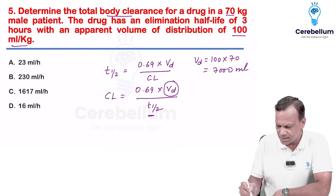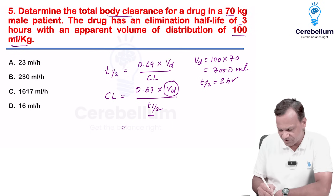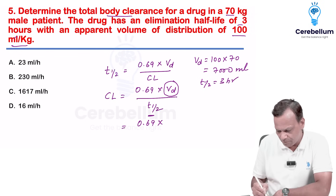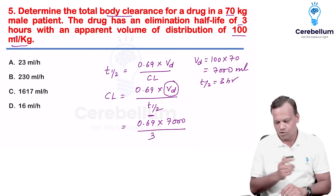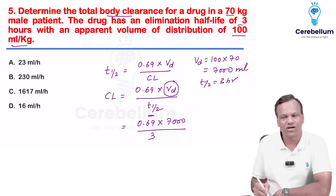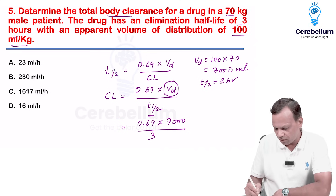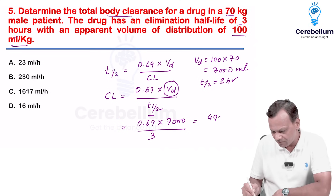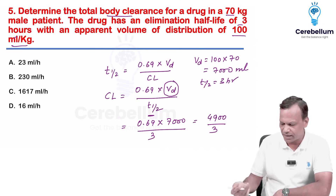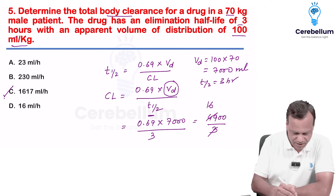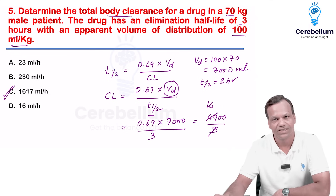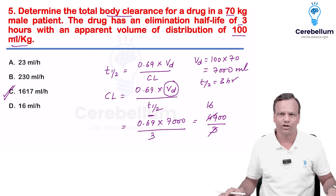The half-life given is 3 hours. Filling the values: clearance = 0.693 × 7000 / 3. Taking 0.693 ≈ 0.7: 0.7 × 7000 = 4900; 4900 / 3 ≈ 1633, approximately 1670 mL/hr. This is a straightforward question — just apply the formula.